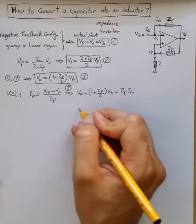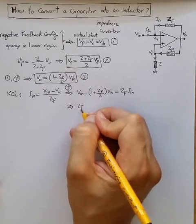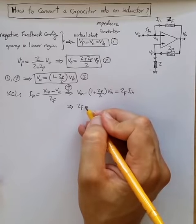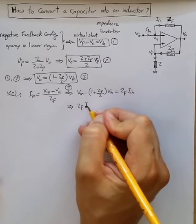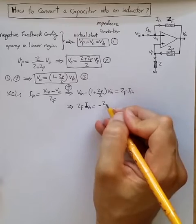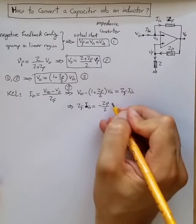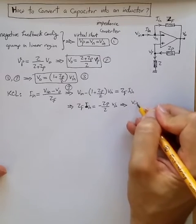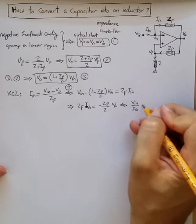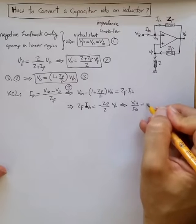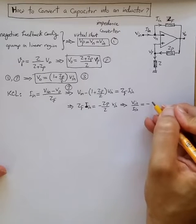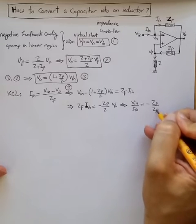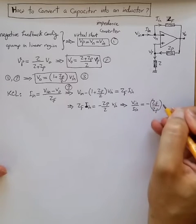This cancels out the VN, so we get ZF times IN equal to minus ZP divided by Z times VN. Or if we rewrite it, we can say VN divided by IN is equal to minus ZF divided by ZP times Z.